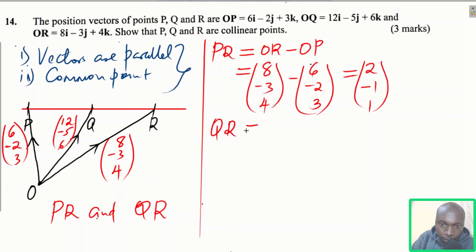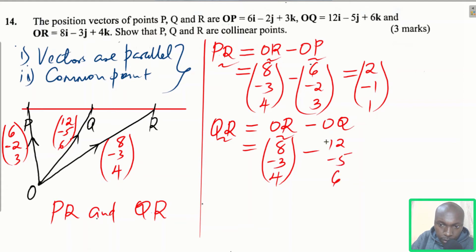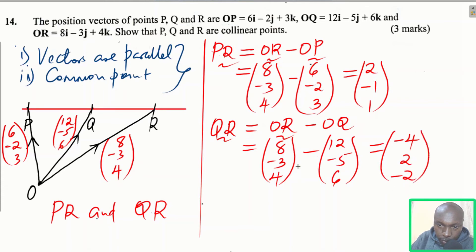Vector QR equals OR minus OQ. OR is (8, −3, 4) minus OQ which is (12, −5, 6). This gives: 8 minus 12 equals negative 4; negative 3 plus 5 equals 2; 4 minus 6 equals negative 2. So QR equals (−4, 2, −2).